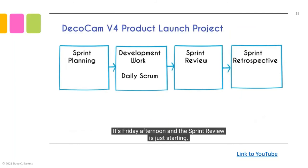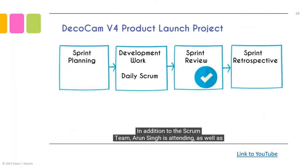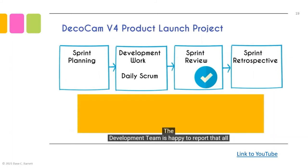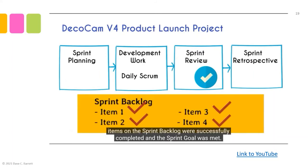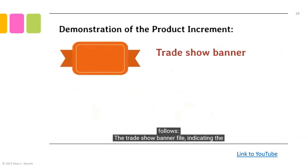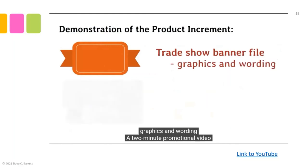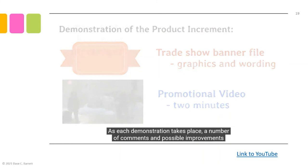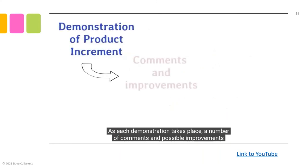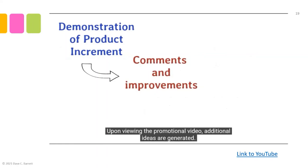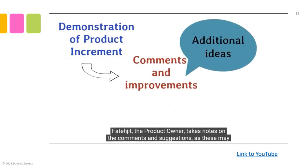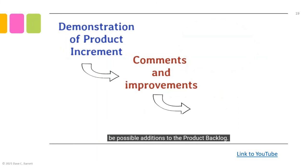It's Friday afternoon and the sprint review is just starting. In addition to the scrum team, Arun Singh and Emma Mansfield, Director of Marketing, are attending. The development team is happy to report that all items on the sprint backlog were successfully completed and the sprint goal was met. A team member demonstrates the product increment: a trade show banner file indicating graphics and wording, and a two-minute promotional video. As each demonstration takes place, comments and possible improvements are suggested. Upon viewing the promotional video, additional ideas are generated. Fadijit the product owner takes notes on comments and suggestions, as these may be possible additions to the product backlog.